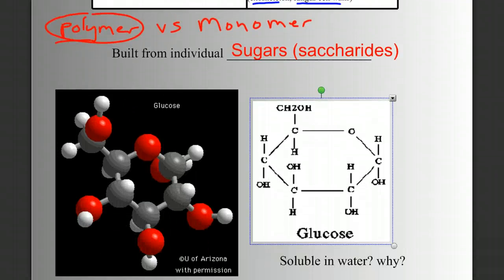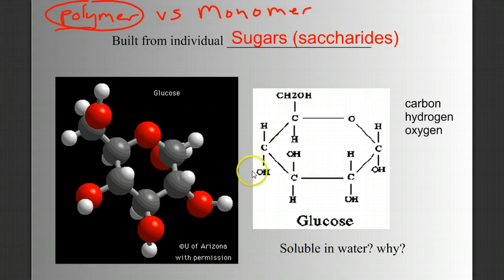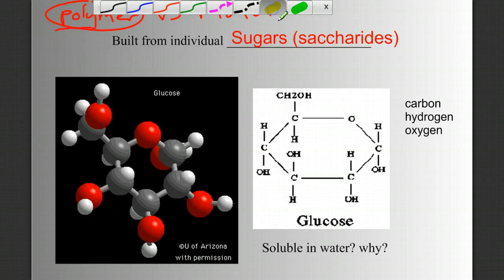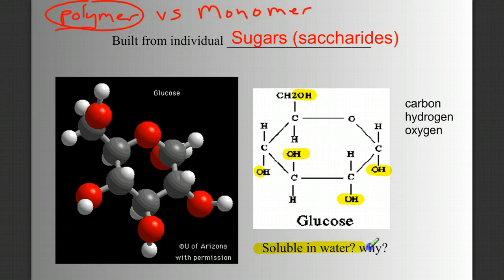So carbon, hydrogen, and oxygen are the only three elements found in a carbohydrate. Now, do you think this molecule is soluble in water, and if so, why? Think back to our properties of water video. As I look at this, I see an important functional group that shows up over and over again: the hydroxyl functional group. We know that hydroxyl groups are polar, and polar substances dissolve well in water. So the answer is yes, because it's polar.